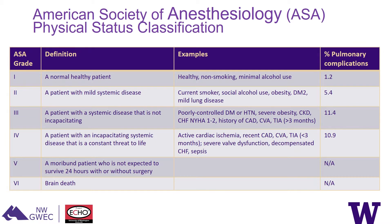The ASA physical status classification runs from grade 1 through 6. Grade 1 is a normal, healthy patient. Grade 2 is patients with mild systemic disease. Grade 3 is patients with systemic disease that's not incapacitating. Grade 4 is patients with incapacitating systemic illness that is a constant threat to life. As you can see, the risk of pulmonary complications increases with higher ASA classification.